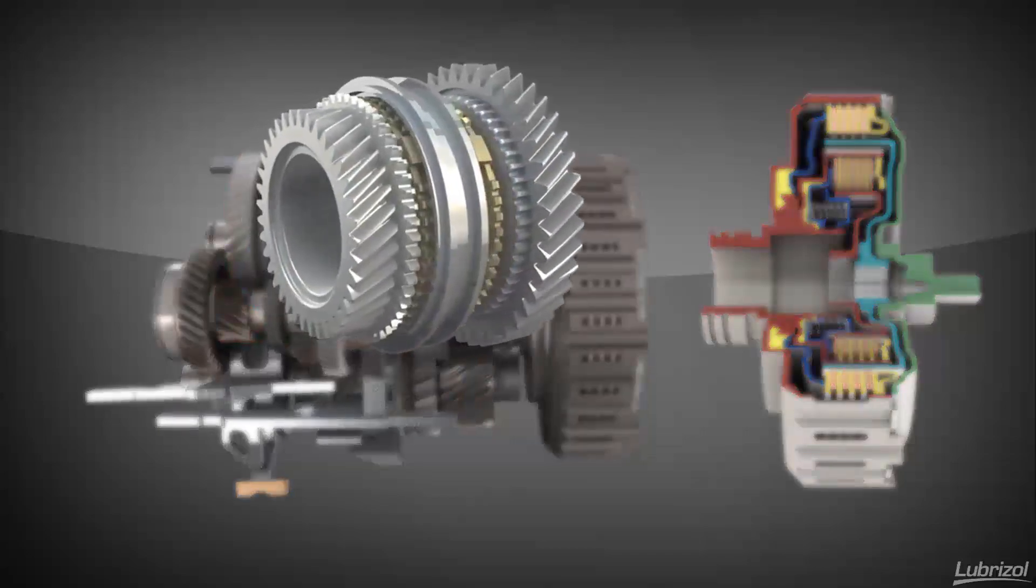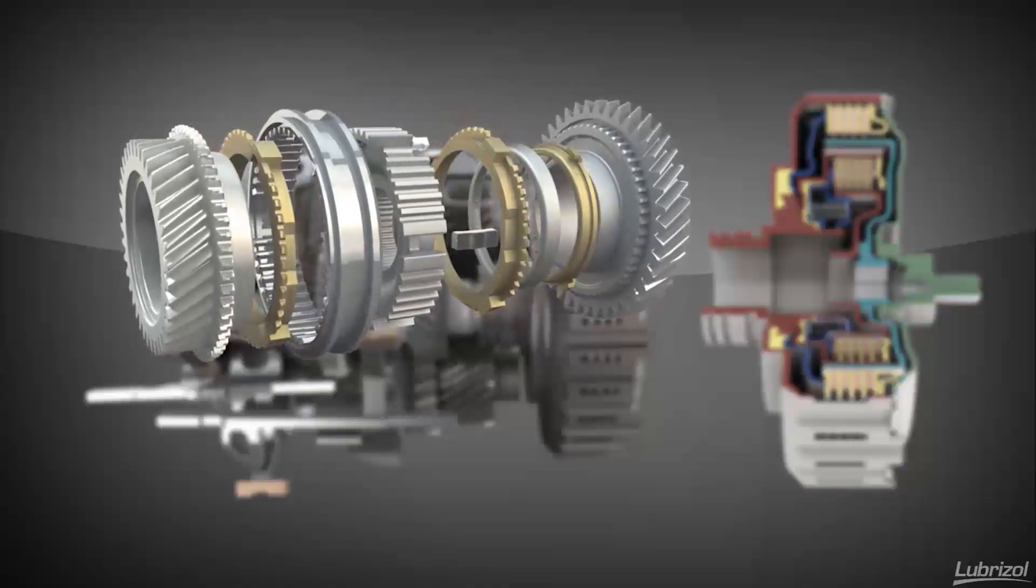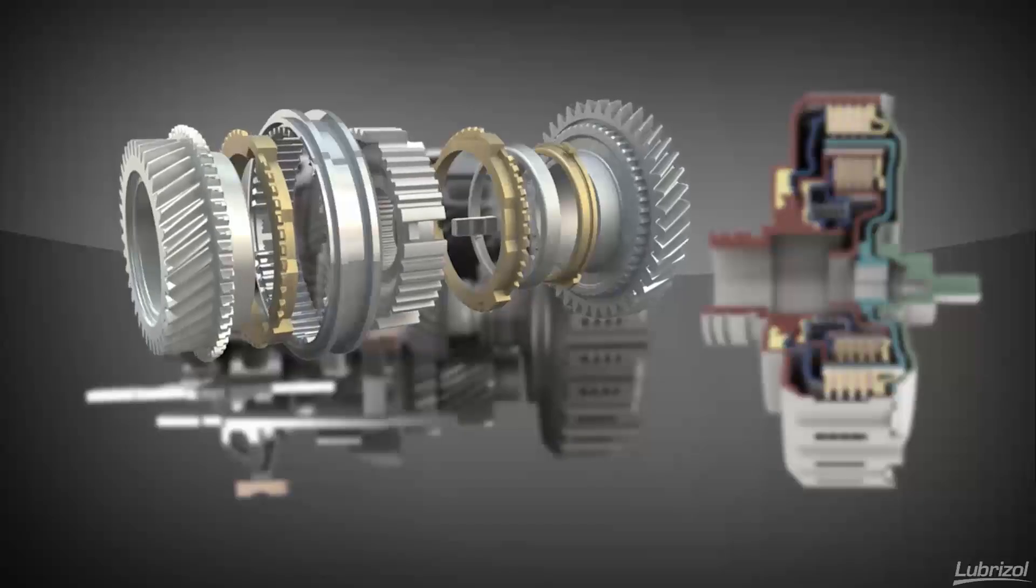Much like a manual transmission, the DCT uses synchronizers, which are friction devices that match the input shaft speed to the selected gear speed during a change.